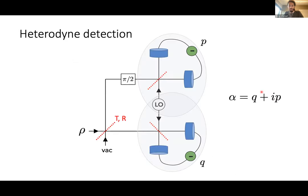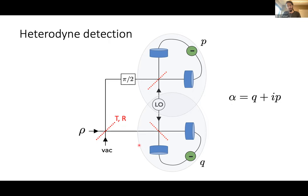The measurement setup needed to implement this protocol is heterodyne detection, also called double homodyne detection. You have a single-mode state, split it on a beam splitter, then measure both output arms with homodyne detection. You get two real values and assemble them into a complex number, effectively projecting the state onto coherent states of complex amplitude alpha. When the beam splitter is balanced, this gives projection onto coherent states, which is what we need for the verification protocol.